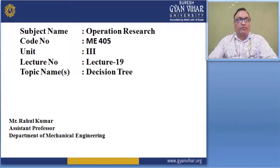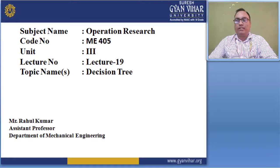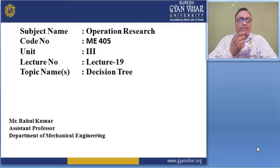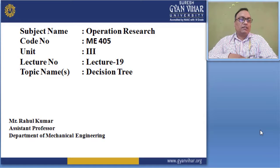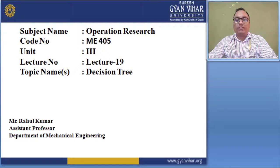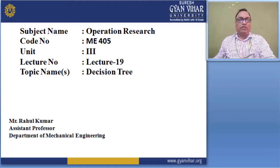Hello everyone. This is the lecture series of Operations Research, subject code ME405, Unit 3, Lecture 19. Today I will discuss the topic of decision trees. This topic gives information about how decisions are divided into different steps and how to find better decisions, with examples from manufacturing and goods. I am Rahul Kumar, Assistant Professor, Department of Mechanical Engineering, Vyas University, Jaipur.